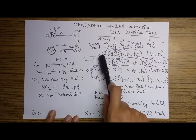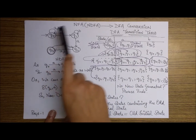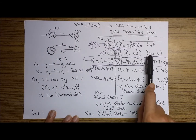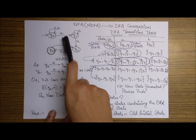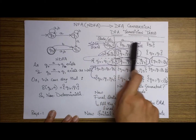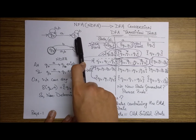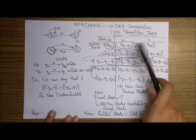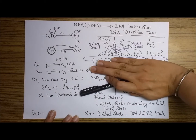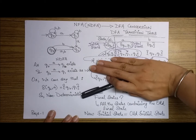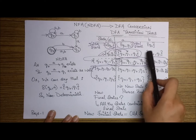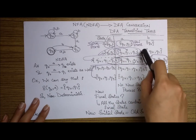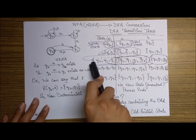Similarly, we check for input B. For state Q0 with input B, we have the transition to Q0. For state Q1 with input B, there is a transition to Q1. So the entry for {Q0, Q1} on input B is {Q0, Q1}. At this stage, the new state generated is {Q0, Q1, Q2}, which becomes the next row in the table.